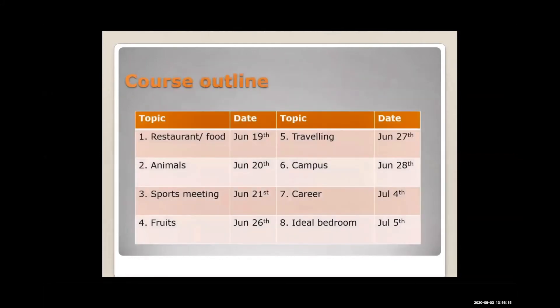There are eight lessons during their summer school, which will begin on the 19th of June. We are planning to integrate eight different communication scenarios into their course content — applying drawing in the topics of animals, campus, and ideal bedroom; using role play in the topics of restaurant, career, and traveling; and playing games in the topics of fruits and sports meeting.